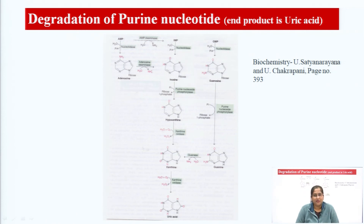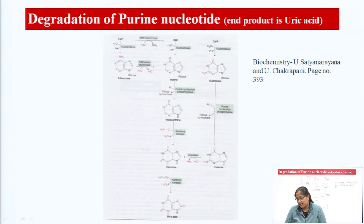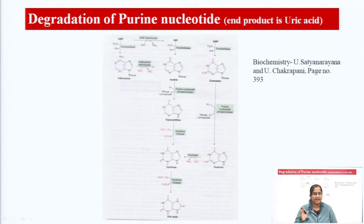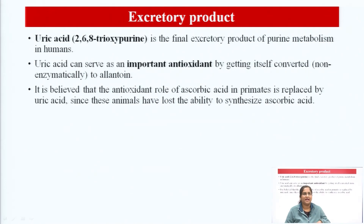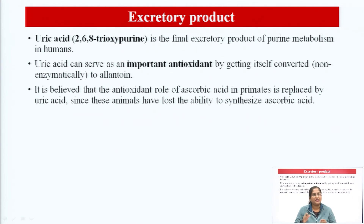Let us discuss the degradation of purine nucleotides. When we catabolize adenosine, inosine, or guanosine, the final degradation product is uric acid, also called 2,6,8-trioxypurine. Uric acid is water-soluble and easily excreted from the body. However, if there is overproduction of uric acid, it accumulates in the body, which causes certain diseases.